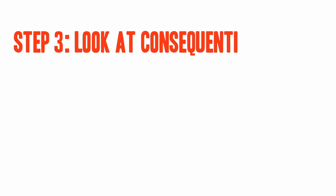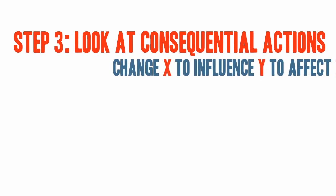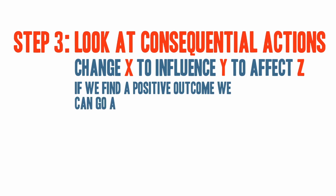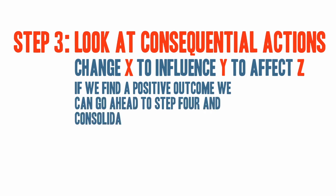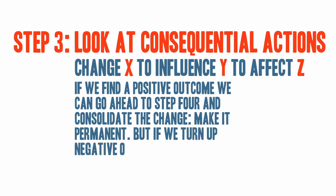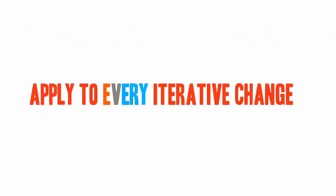Assess. In the assess stage, we are looking at consequential actions. By changing X and improving Y, did we affect Z? Was that effect positive or negative? If we find a positive outcome, we go ahead to step 4 and consolidate the change — make it permanent. But if we turn up negative outcomes, we need to rethink our strategy. With this evaluation principle applied to every iterative change, we can gain the benefits of HCRO in a sustainable and understandable way.